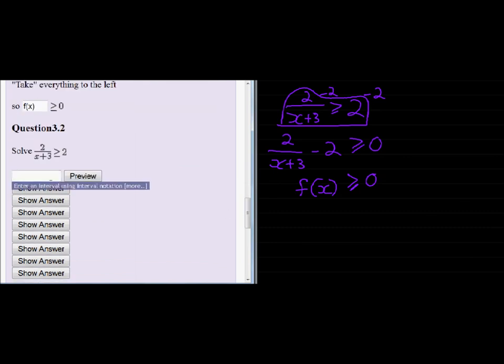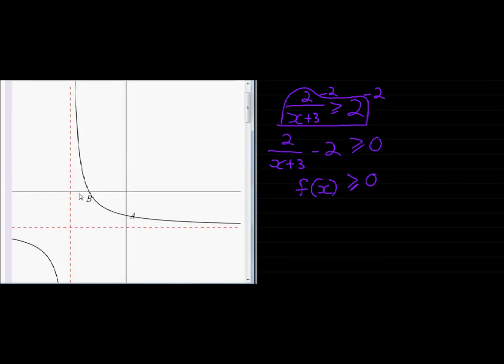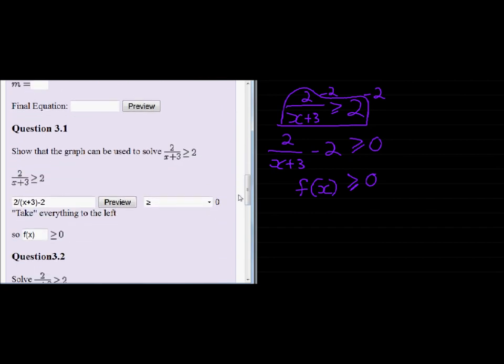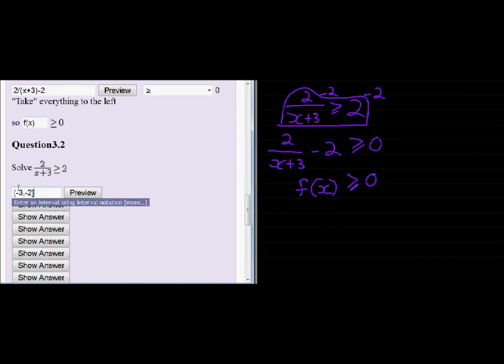They ask us to enter an interval using interval notation, that's the bracket notation. So between negative 3 and negative 2. The difference is that negative 2 is included because of the equal sign—x may equal negative 2, the x-intercept. But x will never equal negative 3, which is why this one has a round bracket.